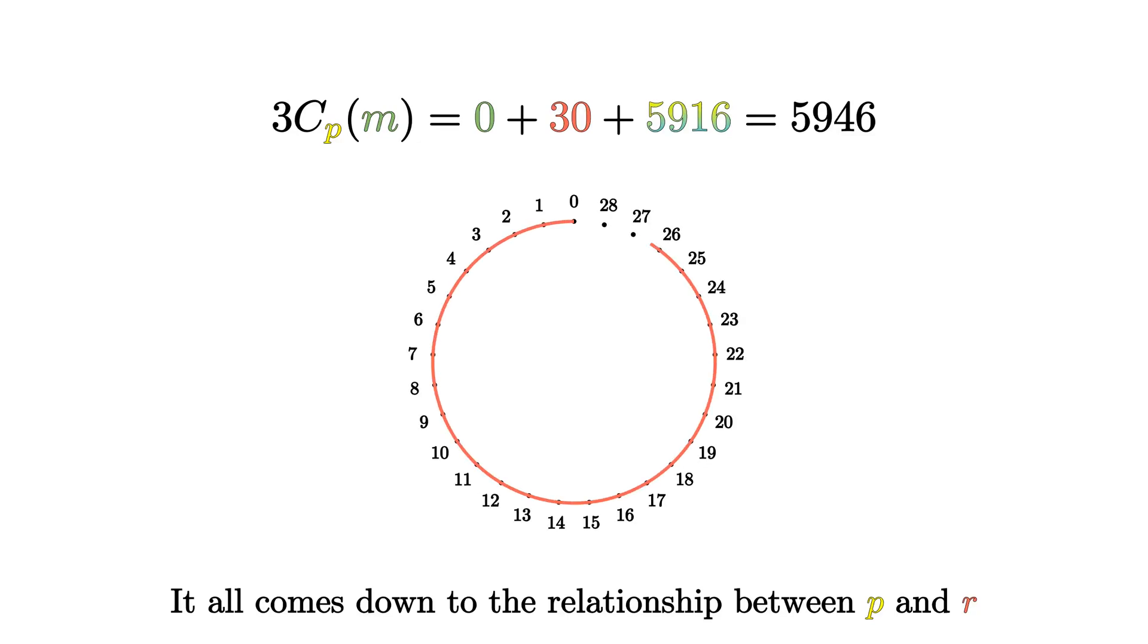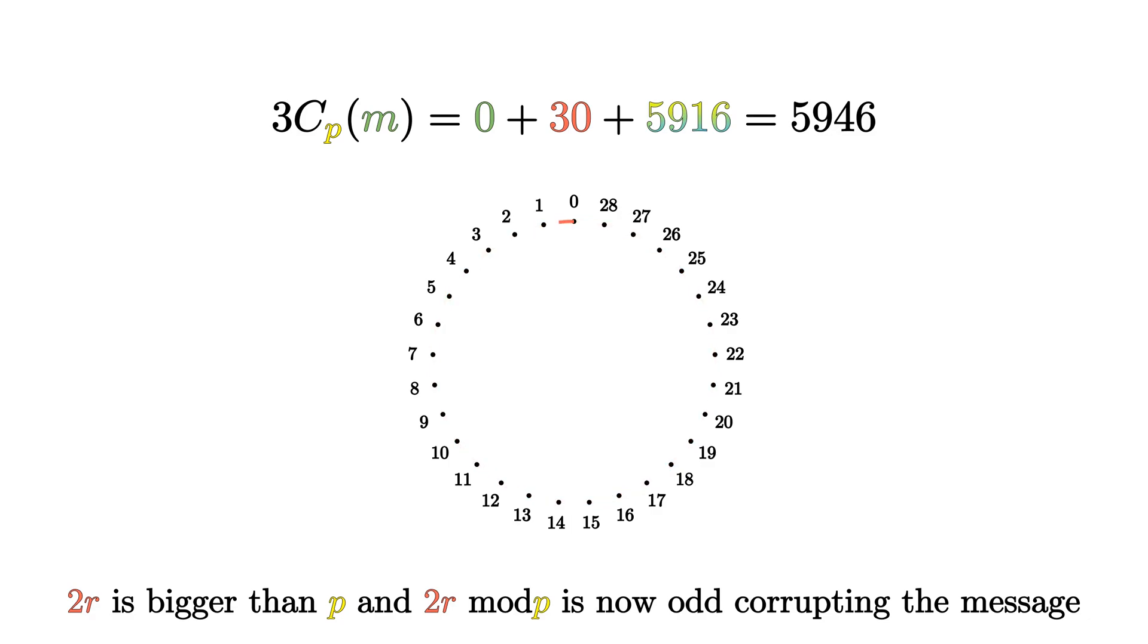The error term has gotten too big, and instead of being even, it's now odd. Since 30 is bigger than 29, the modulo p operation that usually doesn't affect the error because it's too small, now has changed it, corrupting the decryption.